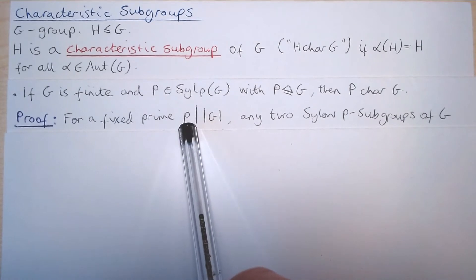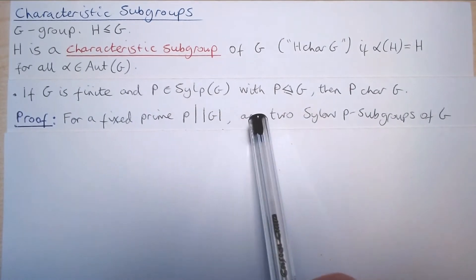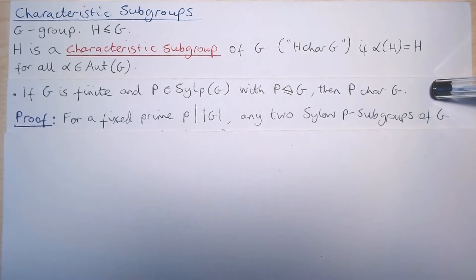So fix a prime P dividing the order of G. Then Sylow theory says that any two Sylow P-subgroups of G are conjugate in G.